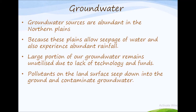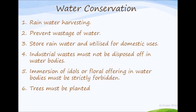This signifies the importance of conserving and preserving our freshwater resources. Here are some ways to conserve water: 1. The practice of rainwater harvesting should be encouraged. 2. Leaking taps should be repaired to prevent wastage of water. 3. Rainwater must be stored and utilized for domestic uses like cleaning the house and watering plants. 4. To prevent water pollution, industrial waste must not be disposed of in water bodies. 5. Immersion of idols or floral offerings in water bodies must be strictly forbidden. 6. Most importantly, trees must be planted because it helps replenish groundwater storage.